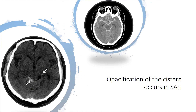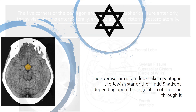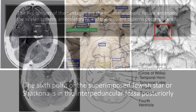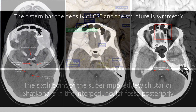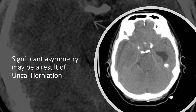Opacification of the cistern occurs in subarachnoid hemorrhage. The suprasellar cistern looks like a pentagon, the Jewish star, or the Hindu Shatkona, depending upon the angulation of the scan through it. The five corners of the pentagon are the inter-hemispheric fissure anteriorly, the sylvian cisterns anteriorly, and the ambient cisterns posteriorly. The sixth point of the superimposed Jewish star or Shatkona is in the interpeduncular fossa posteriorly. The cistern has the density of CSF and the structure is symmetric. Significant asymmetry may be a result of uncal herniation. Opacification of the cistern may be the result of subarachnoid hemorrhage or meningitis.